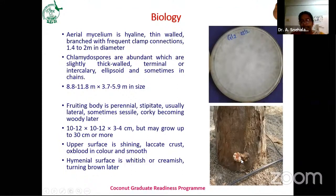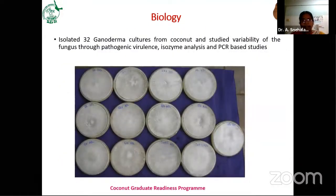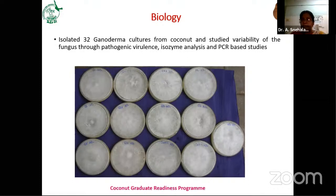The surface of the bracket is shiny, lacquered, oxblood in color, and smooth, while the lower surface is whitish or creamy, which later turns to brown. At HRS Ambachipeta, 32 Ganoderma isolates were isolated from coconut along with one culture from oil palm. Variability of these isolates was studied using pathogenic virulence studies, isozyme analysis, and PCR-based studies.